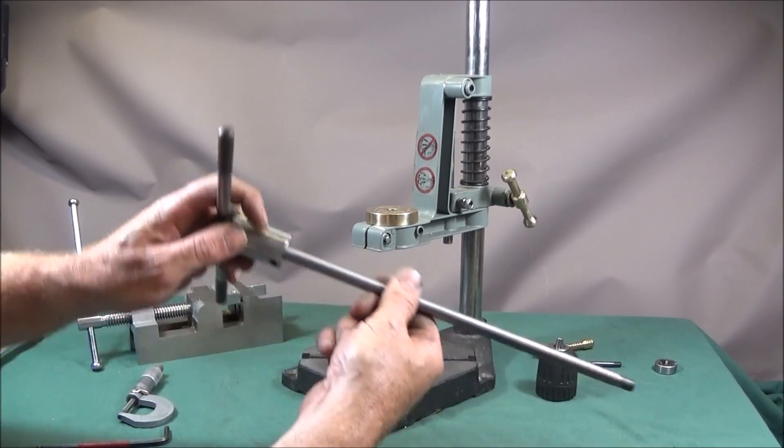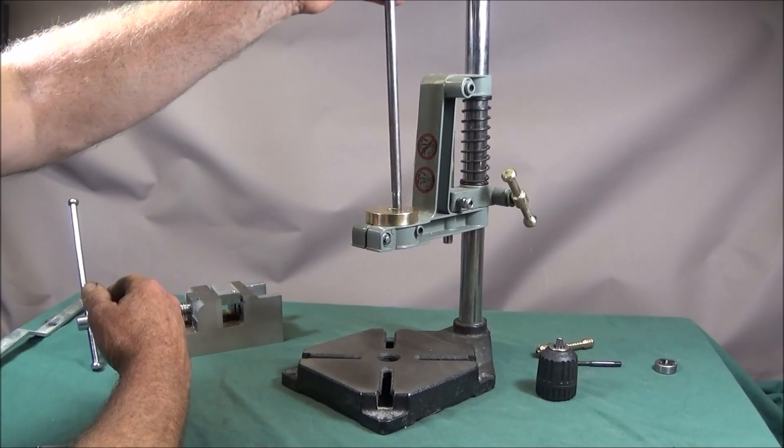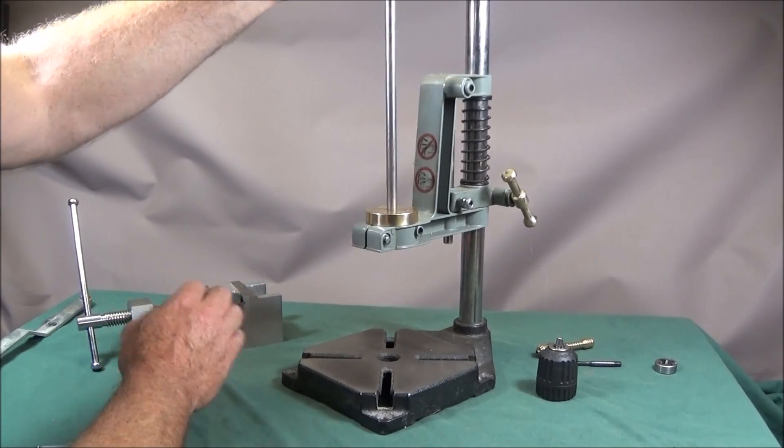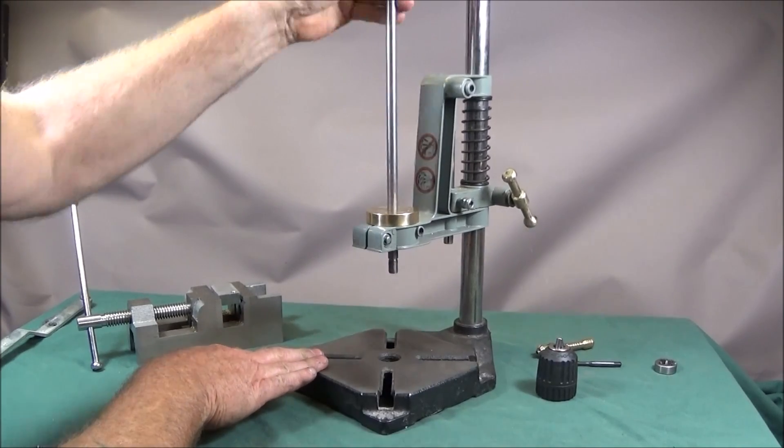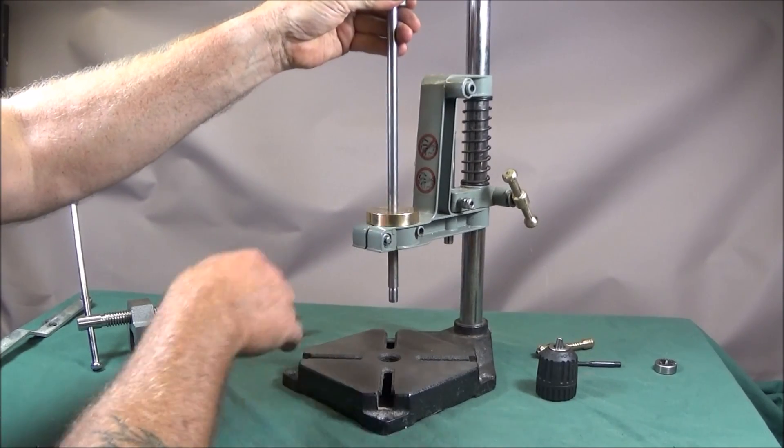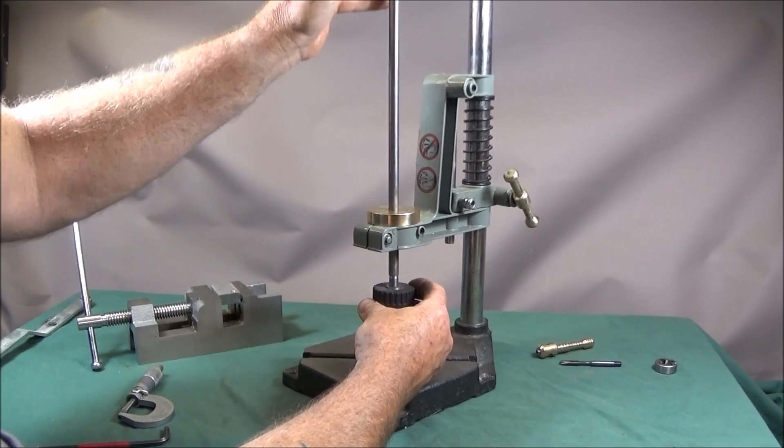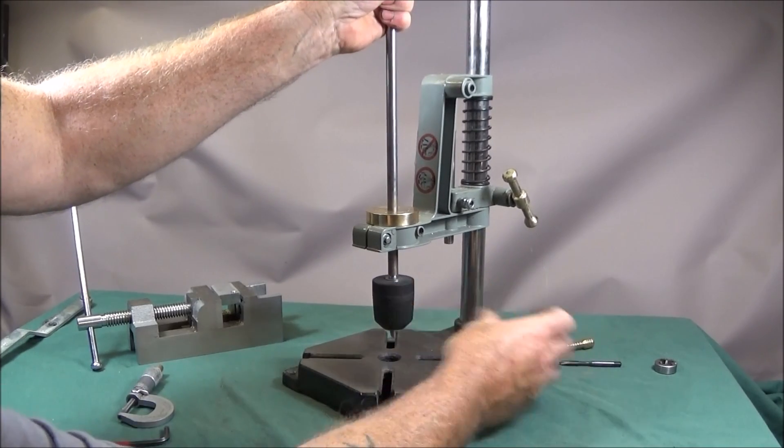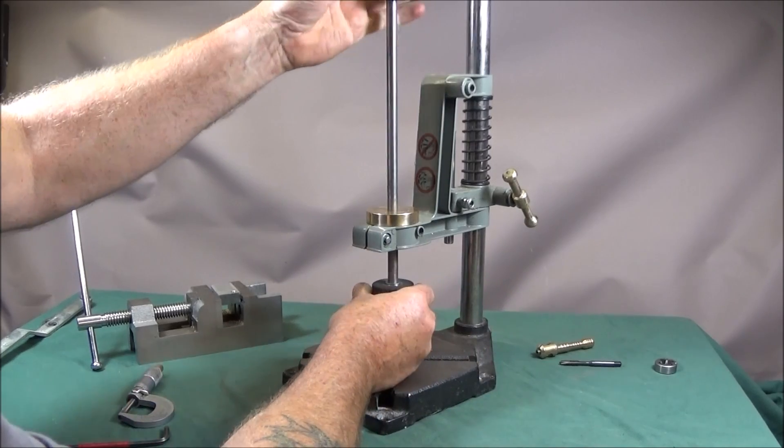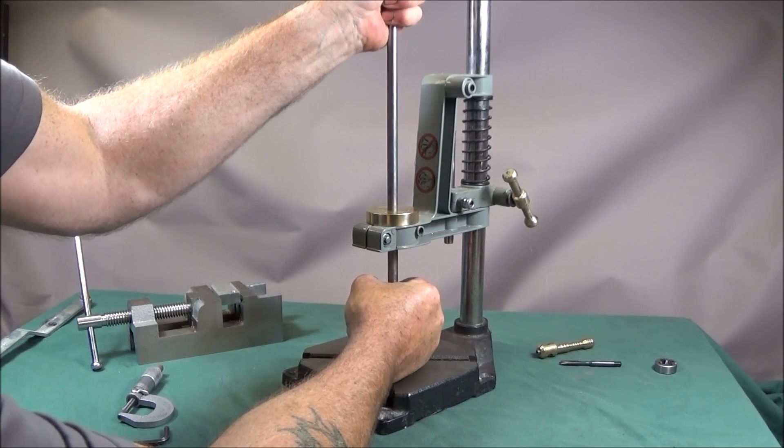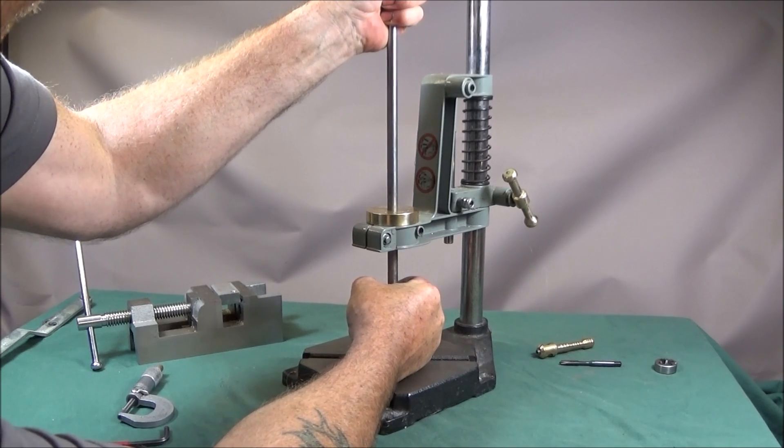So then I take the spindle assembly and insert it into the brass bore and push it down through. And then screw the chuck onto the end of the spindle like that and I can hold the knurled top while screwing the chuck up nice and tightly.